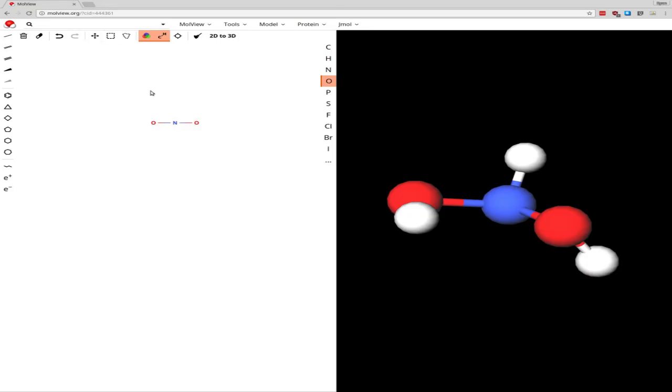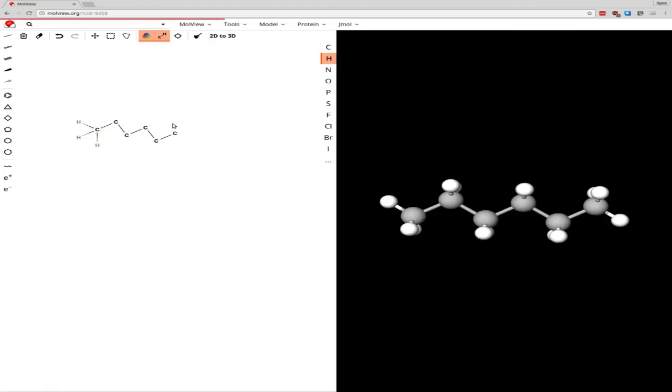So what it does is whenever we're missing electrons, it will automatically throw in hydrogen atoms to make up the deficiency. This is actually a useful feature if we had something like hexane, which has six carbon atoms. These are all saturated with hydrogens, but instead of having to draw in all these hydrogens, we can just rely on Malvue to know that they should be there.